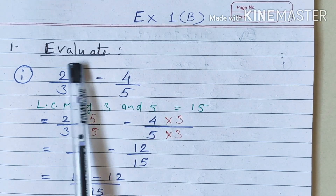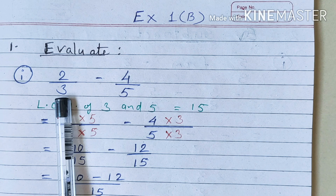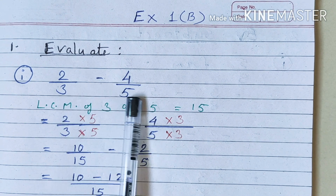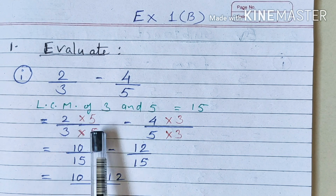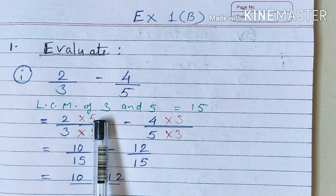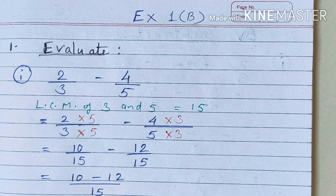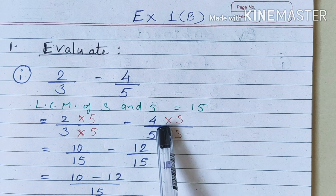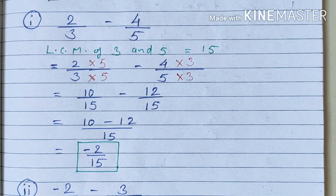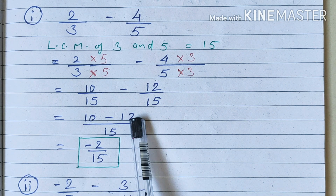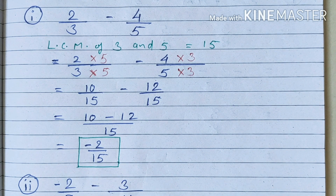Now let us begin with Exercise 1B. Question number one: evaluate 2 upon 3 minus 4 upon 5. We apply the same rules as addition — since the denominators are different, take the LCM of 3 and 5, which is 15. Convert both fractions: 2 times 5 is 10 upon 15, minus 4 times 3 is 12 upon 15. So 10 minus 12 upon 15 gives minus 2 upon 15.